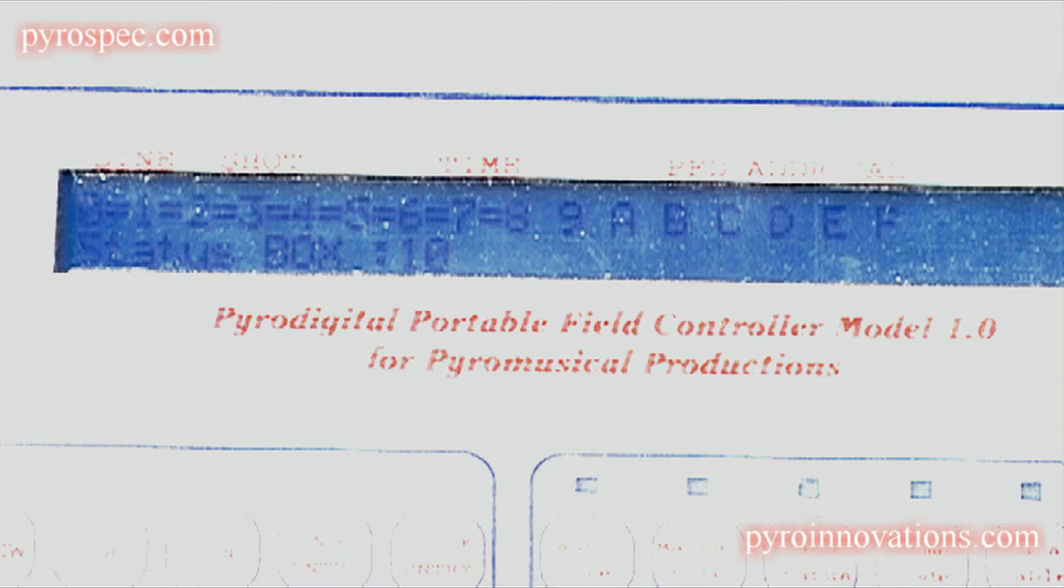If you have a question mark, that means it sees something out at the module but there's nothing in the data table for that shot. That usually indicates that you have something plugged in in an incorrect position. If you see an X, that means there's something in the data table but it does not see it out there in the module.